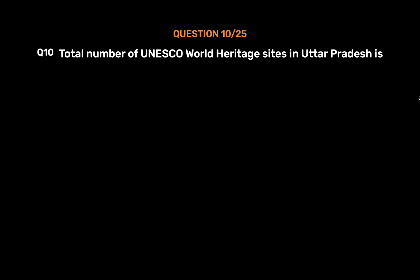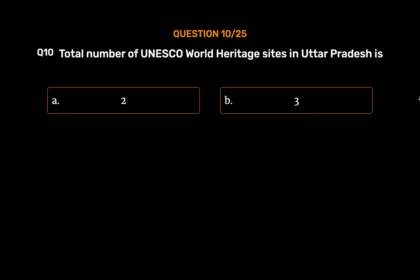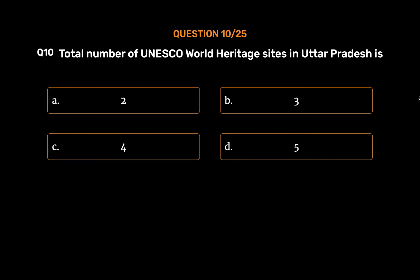Question No. 10: Total number of UNESCO World Heritage Sites in Uttar Pradesh is? Option A: 2. Option B: 3. Option C: 4. Option D: 5. The correct answer is Option B: 3.